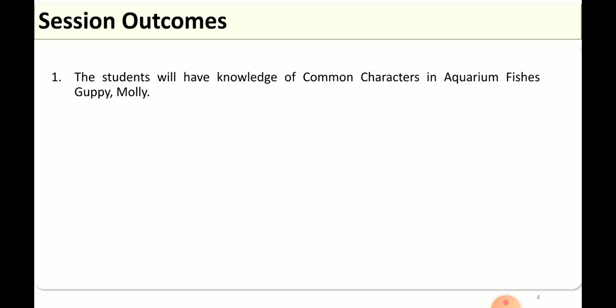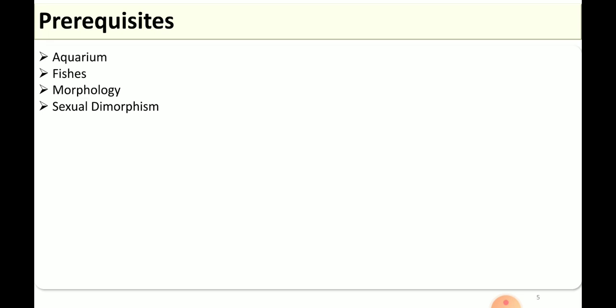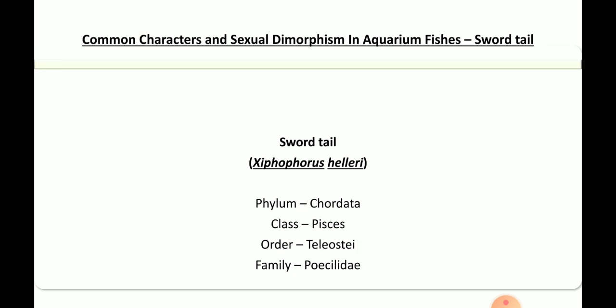The outcome of this study is the common characteristics of aquarium fish — that is guppy and molly — will be clear, and also the sexual dimorphism of these two fishes. Previously you should have an idea about what morphology means, what sexual dimorphism means, and what aquarium fish are. So let's begin with this session.